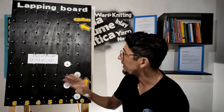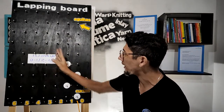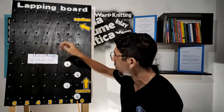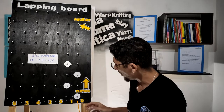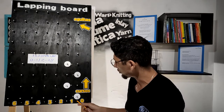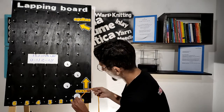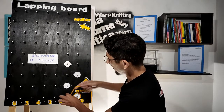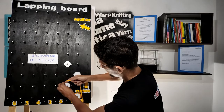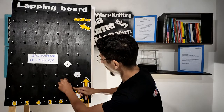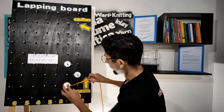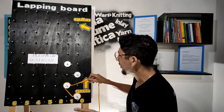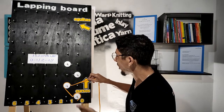Let's represent the one-by-one open lap, which has chain notation zero-one-two-one. We need to go to zero, after that one, now two-one. The basic lapping is finished here, but we can continue on the next needles.